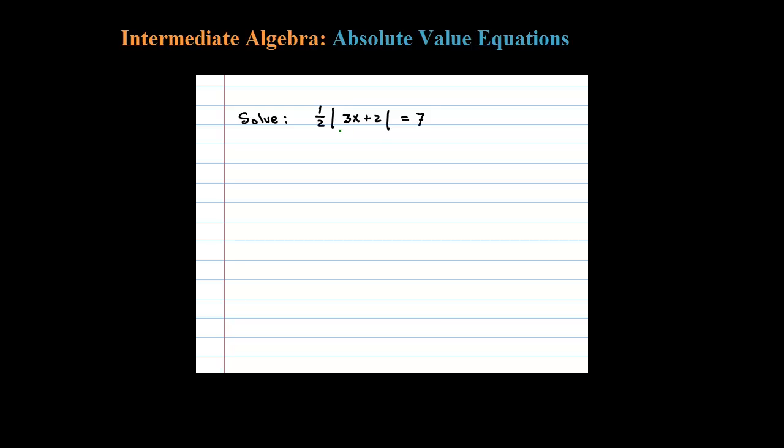Here we're asked to solve an absolute value equation. The first step is to isolate the absolute value, and I can do that pretty easily here by multiplying both sides by 2. 2 times 1/2 is just 1, so that'll just leave me with absolute value of 3x plus 2 equals 14.